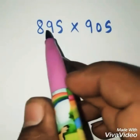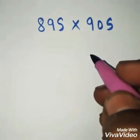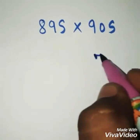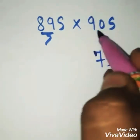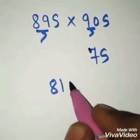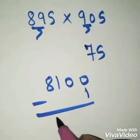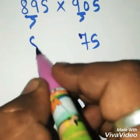When you multiply 895 into 905, what answer do we get? Here we know the fundamental: write down 75. From 89 and 90, which one is greater? 90. The square of 90 is 8100. Subtract 1 from it, so you get 8099. Write down here 8099. That's it, you got the answer in just a fraction of a second.